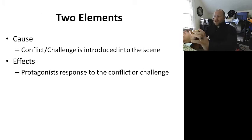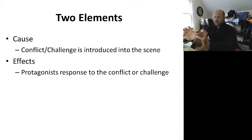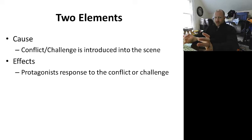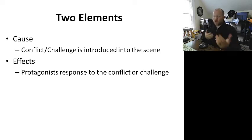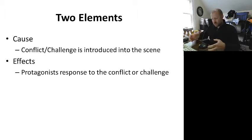When it comes to actually constructing your scene, there's a cause and effect to it. Some sort of conflict or challenge is introduced in the scene — that's the cause — and the effect is the protagonist's response to the conflict or the challenge. This is what you need to do when you construct your scenes. When you have these plotted points on your outline and you start coming up with individual ways to outline specific scenes, understand the idea of cause and effect. There has to be some sort of conflict in the actual scene, and there needs to be an effect from that conflict.